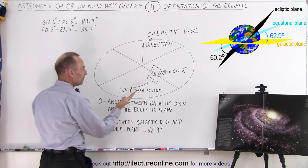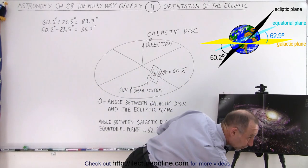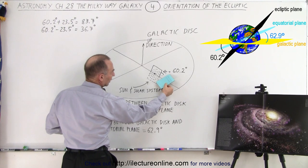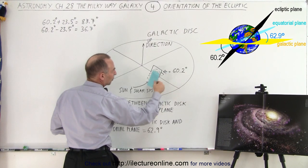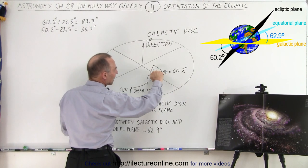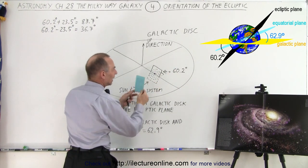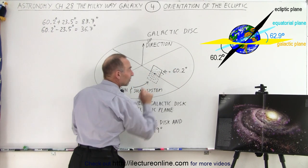And then here imagine, let me grab a little notebook right here. Imagine then that from the plane we tilt up about 60.2 degrees. This is the angle between the galactic disk and the ecliptic plane, at an angle of about 60.2 degrees.